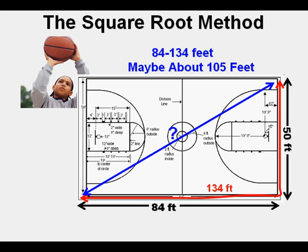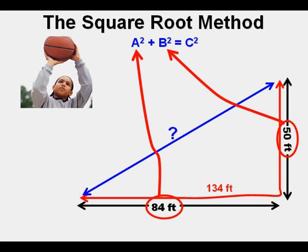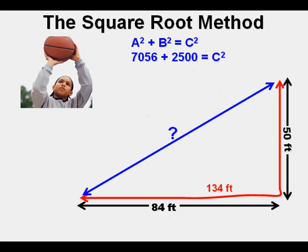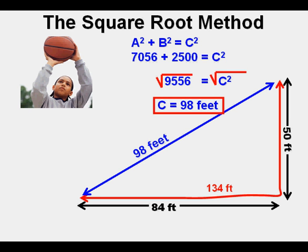Joe knows that by solving a quadratic equation he can get an exact number, and remembers the Pythagorean Theorem: A squared plus B squared equals C squared. He puts in 84 for A and 50 for B, squares them to get 7,056 plus 2,500 equals C squared, then combines like terms to get 9,556 equals C squared. Taking the square root of each side, his answer is approximately plus or minus 98 feet. Since negative 98 feet is not physically possible, the real-world answer is just 98 feet.